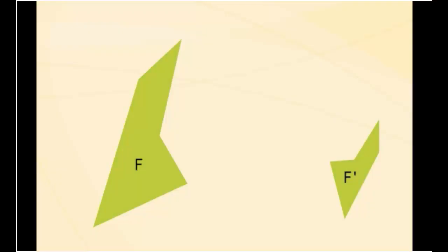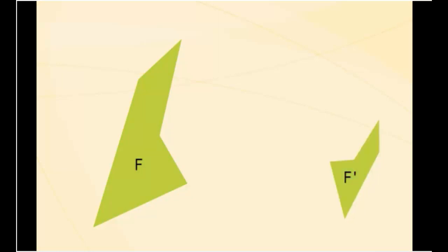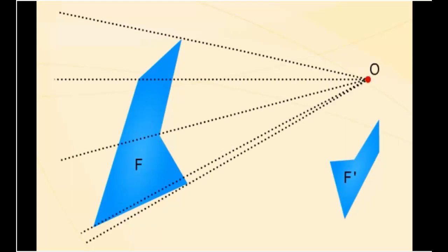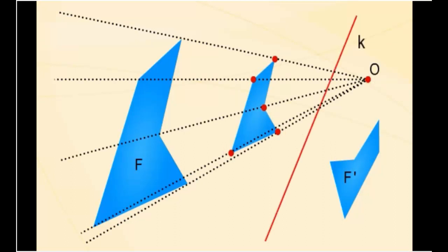Взгляните на подобные фигуры. Какие преобразования можно использовать, чтобы получить из фигуры F фигуру F'? Мы можем уменьшить фигуру F, используя точку O и масштаб в 2 раза меньше, а затем отразить фигуру с помощью линии K.